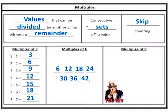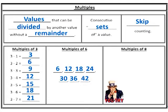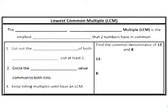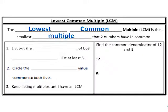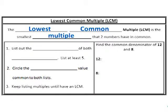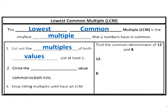It does not take that long to find those values, but it's going to really help us when we have to move on to adding and subtracting unlike fractions. In order to add or subtract those unlike fractions, we need to have the lowest common multiple — the smallest multiple that two numbers have in common. This is also known as the lowest common denominator. The best way to find it is to list out all the multiples of both values — list about four or five. Step two: circle the smallest value common to both lists. Step three: if you don't see a common multiple, list out more multiples in each list.